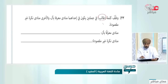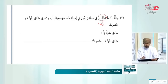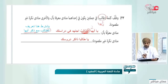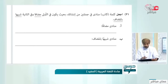وظف كلمة 'طالب' في جملتين: الأولى منادى معرف بأل والثانية منادى نكرة غير مقصودة. للمعرف بأل لا بد من 'أيها' مع إدخال أل: 'يا أيها الطالب'. للنكرة غير المقصودة المنادى يكون منصوباً مباشرة: 'يا طالباً ذاكر دروسك'.